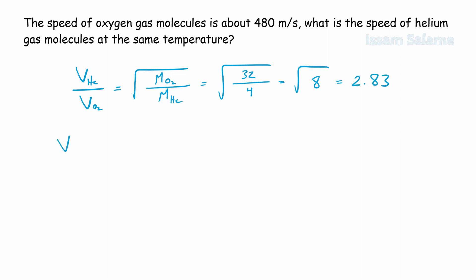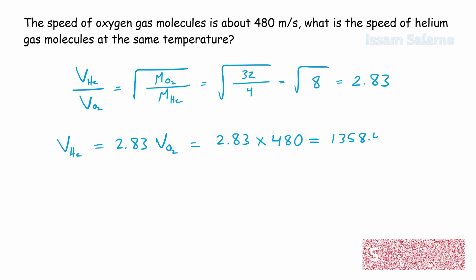So the rate of diffusion of helium gas equals 2.83 multiplied by the rate of diffusion of oxygen gas, which is 480 m/s. The answer is 1358.4 meters per second.